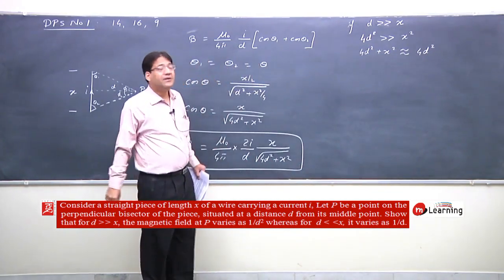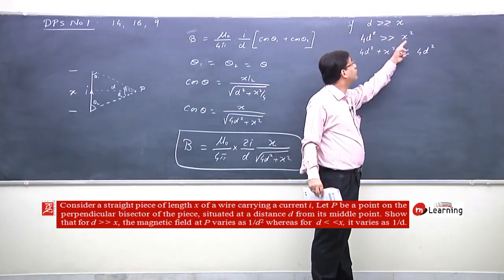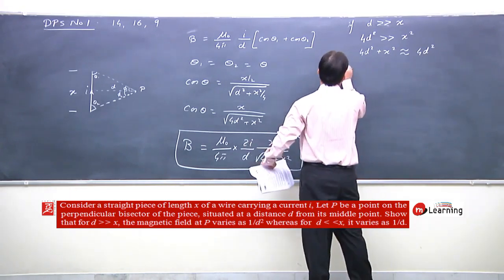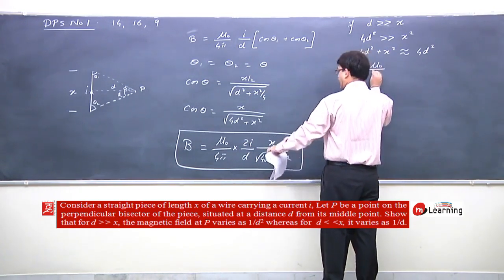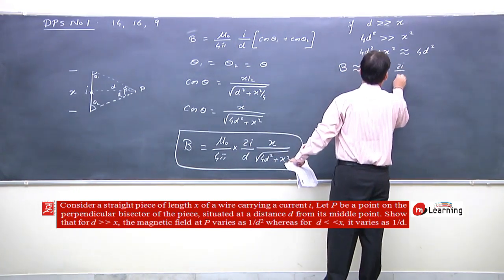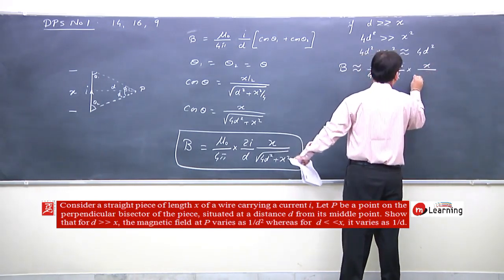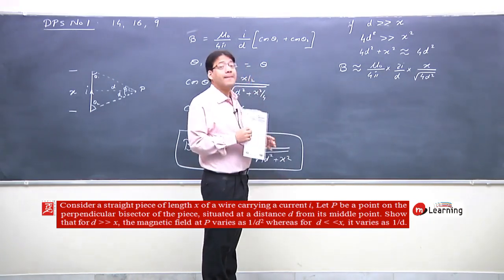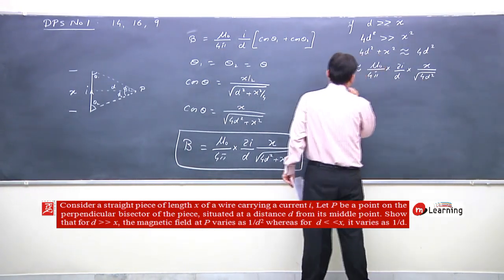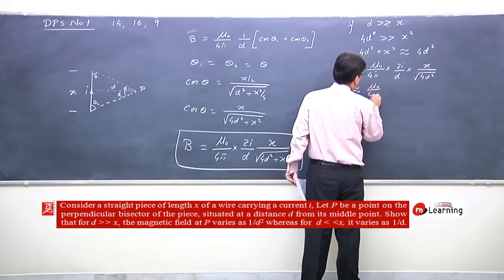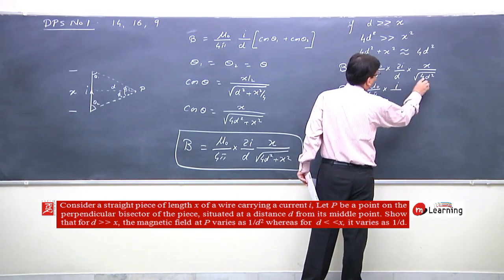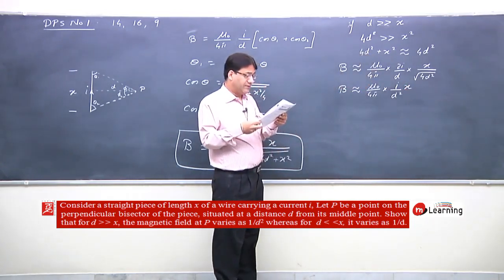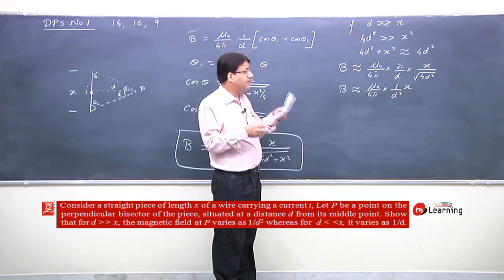Because X is negligible as compared to D, X² would be negligible as compared to 4D². So 4D² + X² may be approximated as 4D². Rewriting B: B ≈ μ₀/4π · 2I/D · X / √(4D²), which simplifies since √(4D²) = 2D. Therefore B ≈ μ₀/4π · IX/D² — so B is proportional to 1/D² when D is very large compared to X.